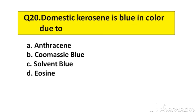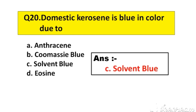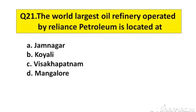Question number 20. Domestic kerosene is blue in colour due to option A: Andrasin, B: Comasi blue, C: Solvent blue, D: Eosin. The right answer is option C: Solvent blue.